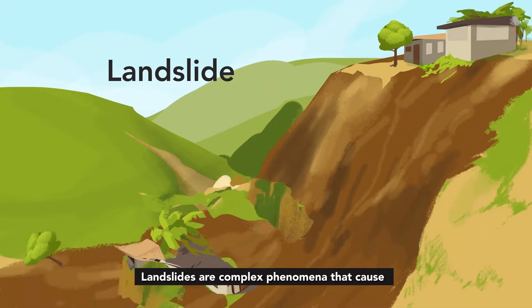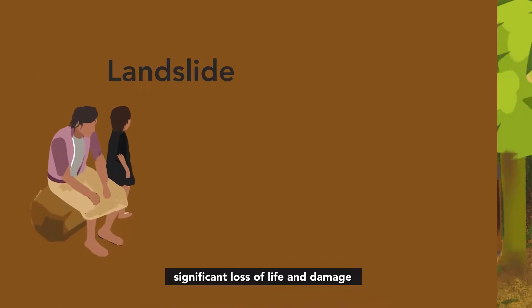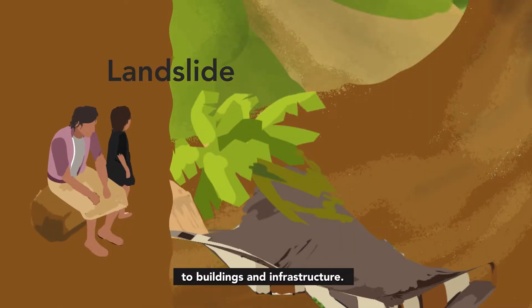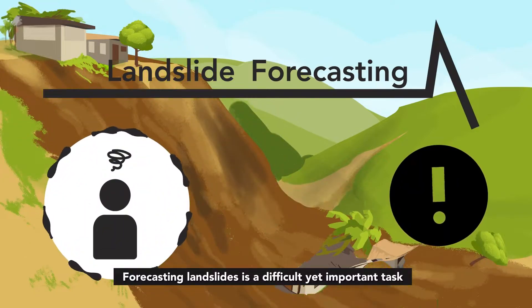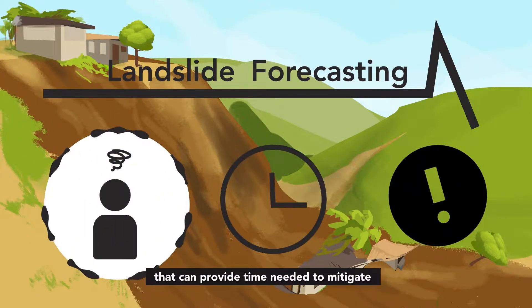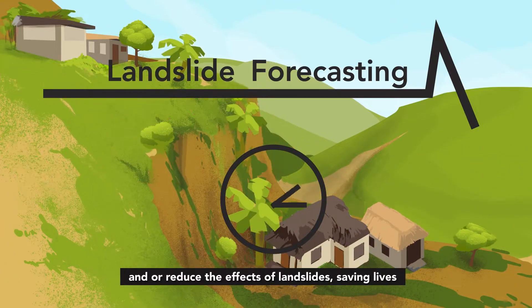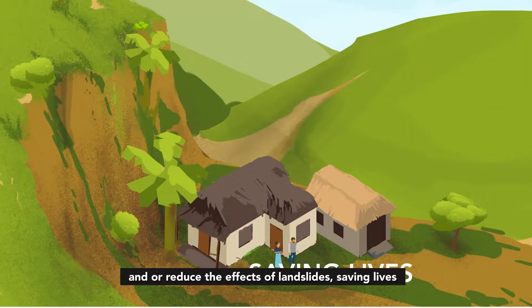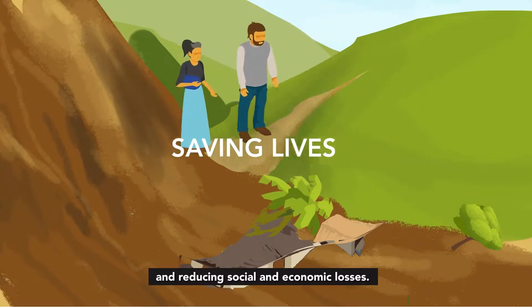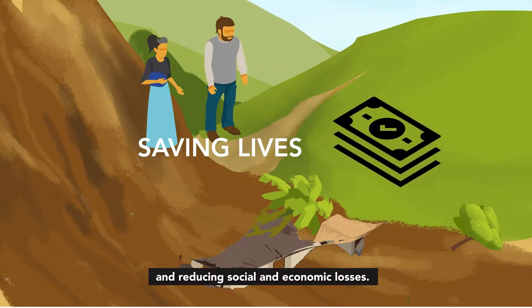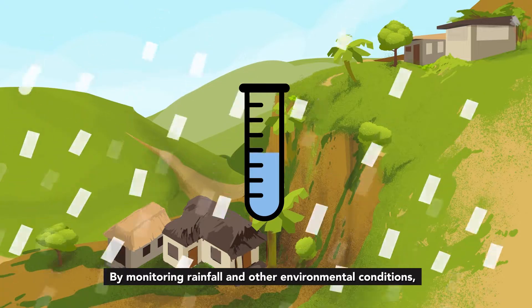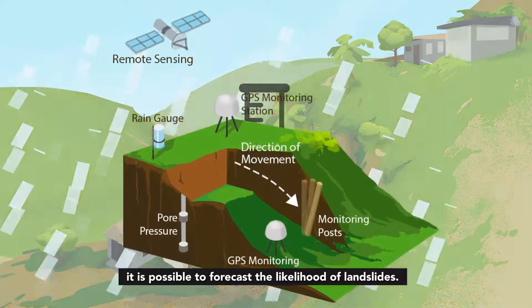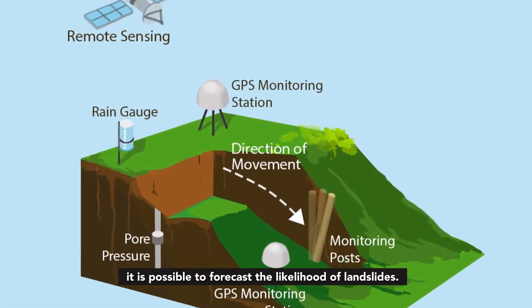Landslides are complex phenomena that cause significant loss of life and damage to buildings and infrastructure. Forecasting landslides is a difficult yet important task that can provide the time needed to mitigate and reduce the effects of landslides, saving lives and reducing social and economic losses. By monitoring rainfall and other environmental conditions, it is possible to forecast the likelihood of landslides.